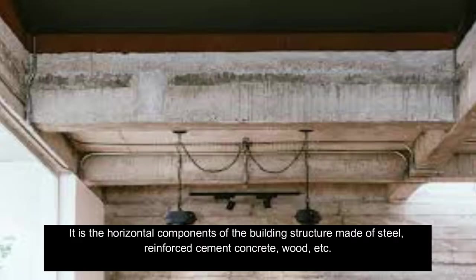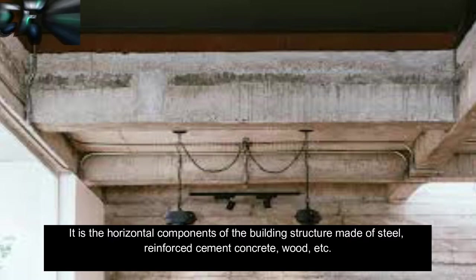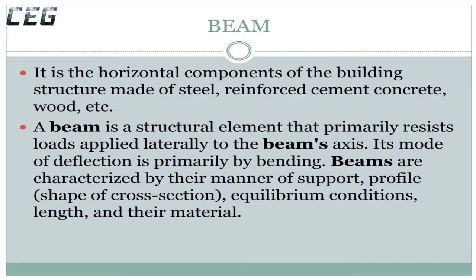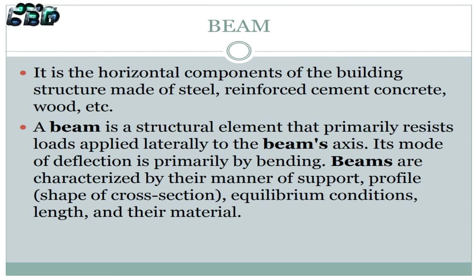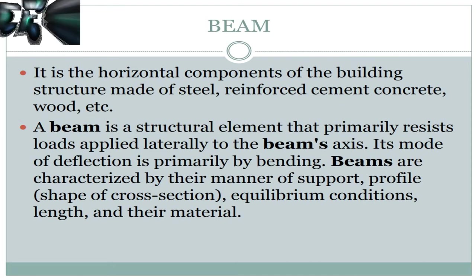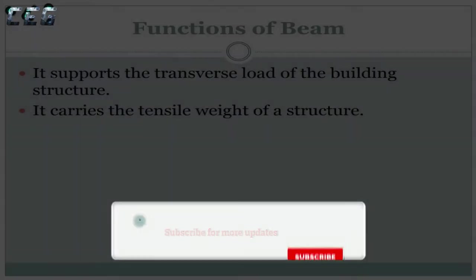Beam: It is the horizontal component of the building structure made of steel, reinforced cement concrete, wood, etc. A beam is a structural element that primarily resists loads applied laterally to the beam's axis. Its mode of deflection is primarily by bending. Beams are characterized by their manner of support, profile, shape of cross-section, equilibrium conditions, length, and their material.